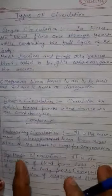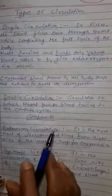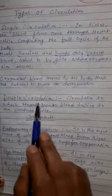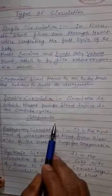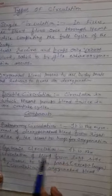This means that heart pumps the blood two times in one complete cycle. The components of double circulation comprise of two main types of circulation: pulmonary circulation and systemic circulation.